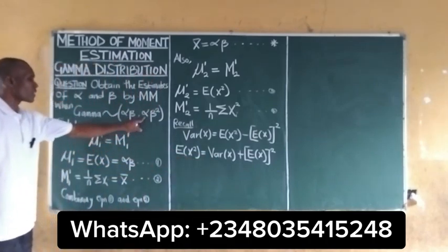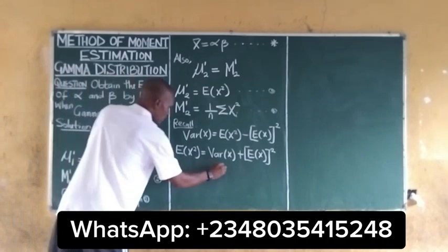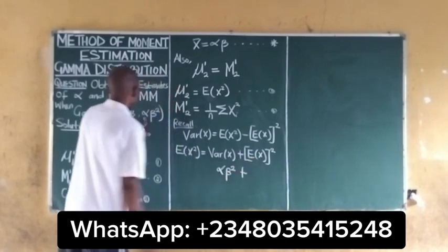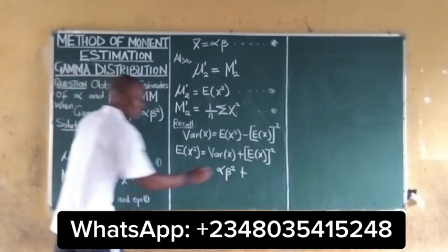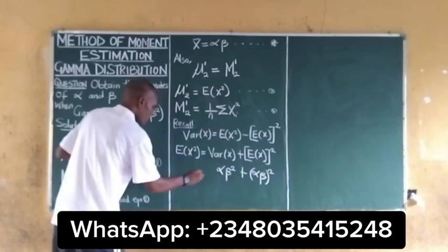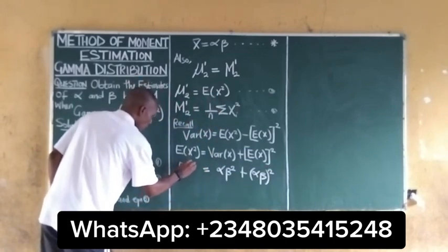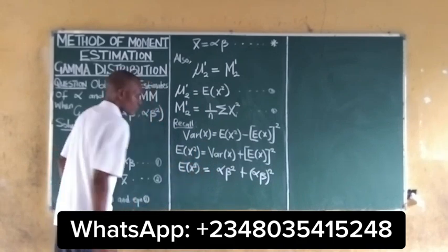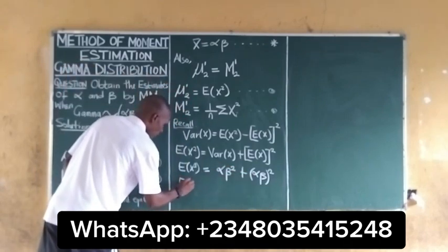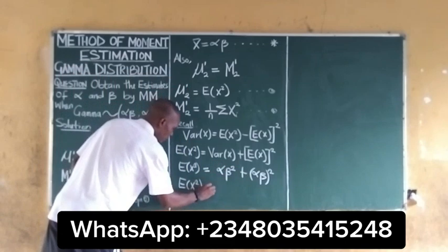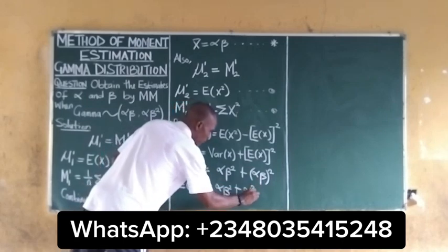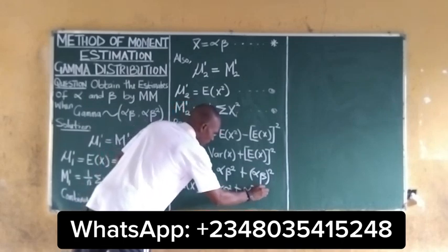The variance is already given as alpha times beta squared, and the expected value of X is alpha times beta. So the expected value of X squared equals alpha·beta² plus (alpha·beta)², which expands to alpha·beta² plus alpha²·beta².